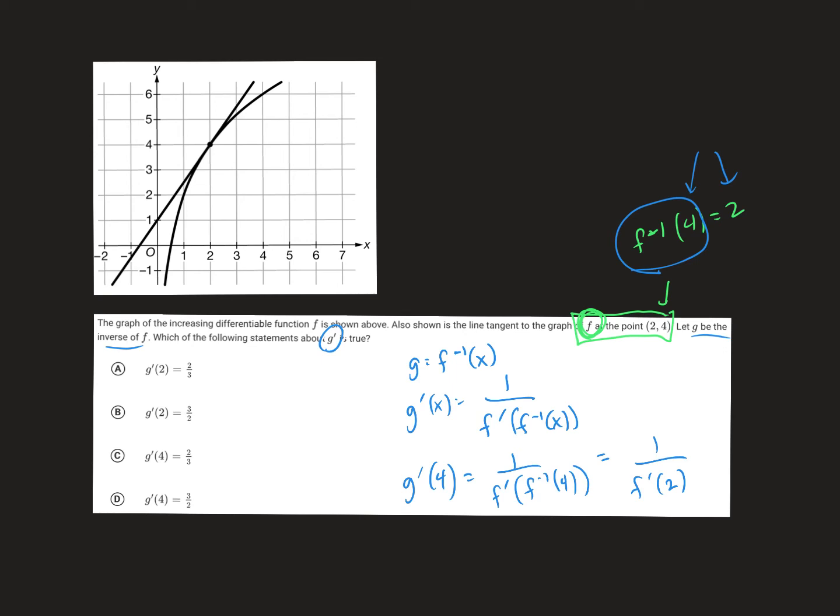What we're given in the problem is the graph of f itself, not the graph of f inverse. So, if I'm looking at f prime of 2, if I look at this graph, that means the slope of a tangent line at x equals 2. And they've given you a line that's tangent. If I look at this line, and I find another grid point that it passes through, I can actually count that slope out,